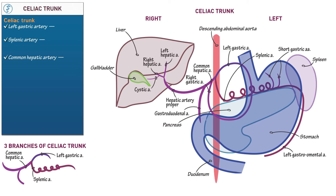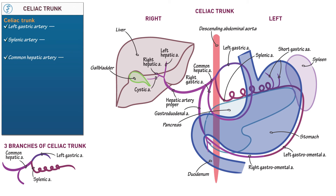Then return to the gastroduodenal artery and show that it passes deep to the stomach and duodenum, then splits to form the right gastroomental artery, which anastomoses with the left gastroomental artery, and the superior pancreaticoduodenal artery, which — as its name implies — sends branches to the pancreas and duodenum.